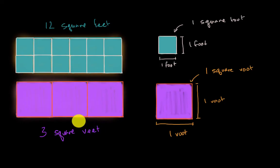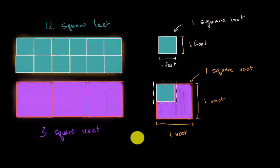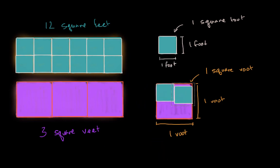I want you to think about whether that makes sense. Think about how many square feet would make up one square voot. In fact, we can figure that out right over here. That's one square foot, two square feet, three square feet, and then four square feet. So four square feet make up one square voot. So think about, does it make sense that three square veet is the same thing as 12 square feet?